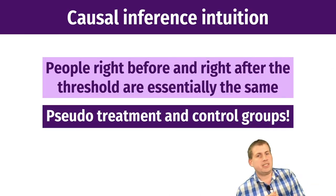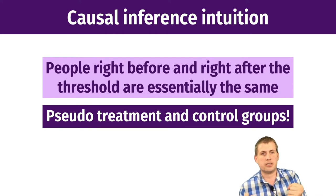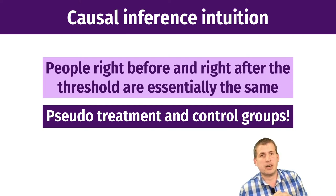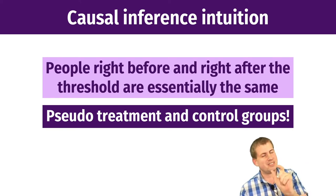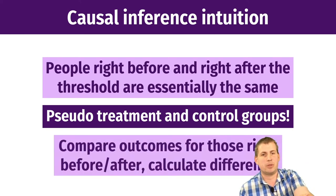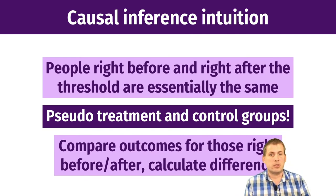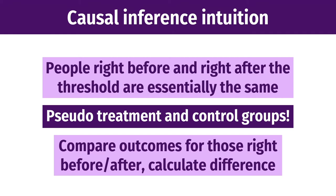People in that bandwidth right next to the cutoff become your treatment and control groups: those above the cutoff are essentially your treatment group, and those below are your control group. Given that, you can do analysis just like we've been doing with randomized controlled trials — calling these groups treatment and control because they're slightly different but basically the same kind of people. We can compare outcomes for those right before and right after the threshold and calculate the difference.